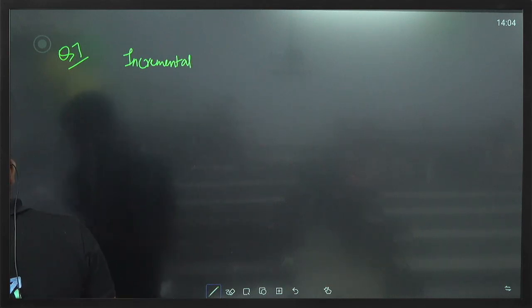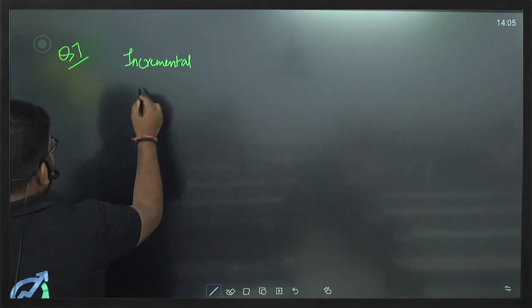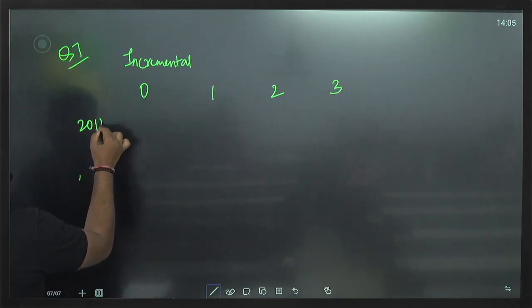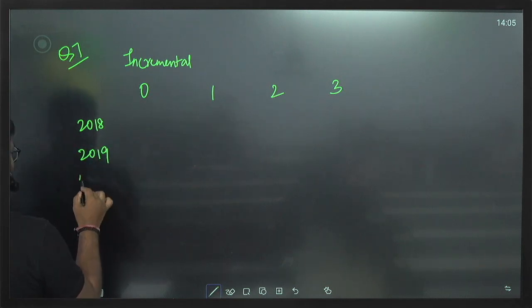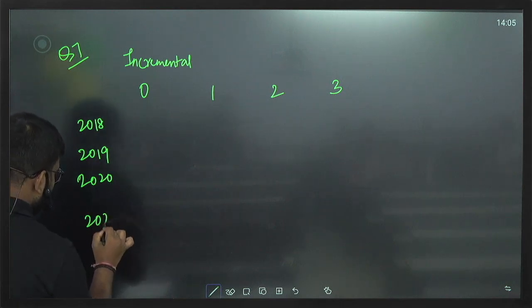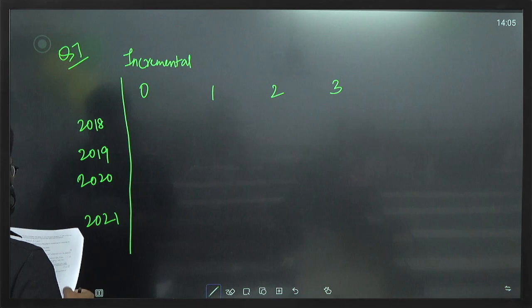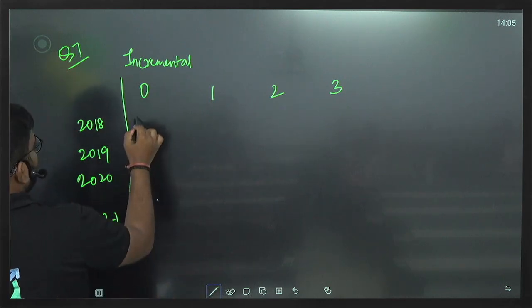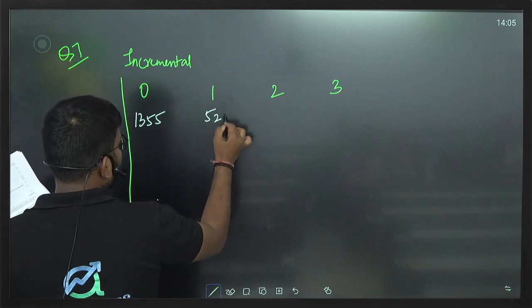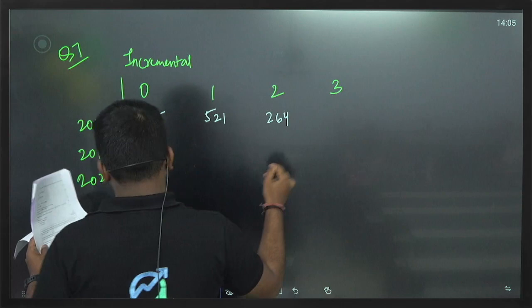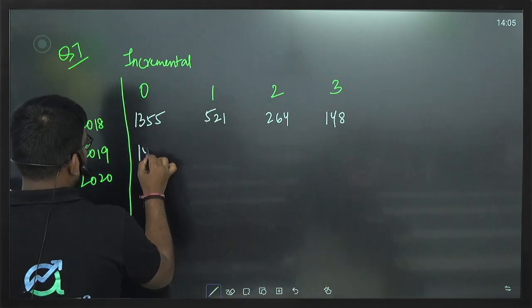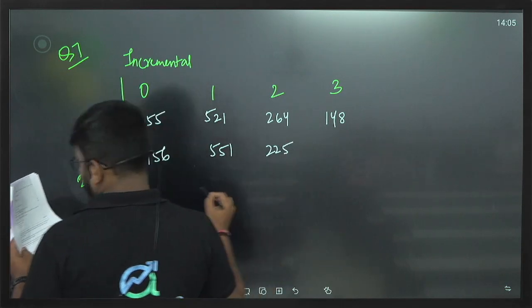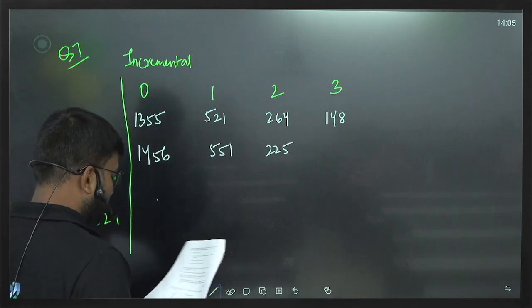Calculate incremental by subtracting. So incremental figures come out as: development years 0, 1, 2, 3 for accident years 2018, 2019, 2020, 2021. The values are: 1,355; 521; 264; 148 (and so on for each row). Then: 1,456; 574; 225 etc. The full incremental triangle is built this way by subtracting successive cumulative values. Then we adjust for inflation.